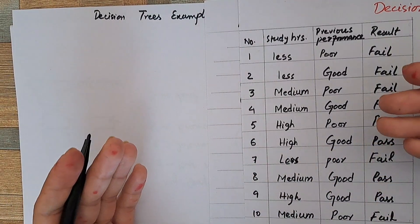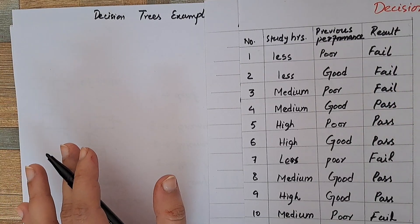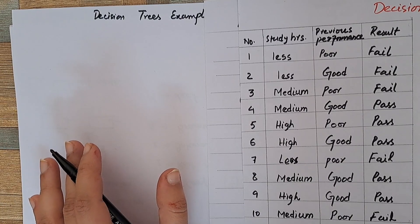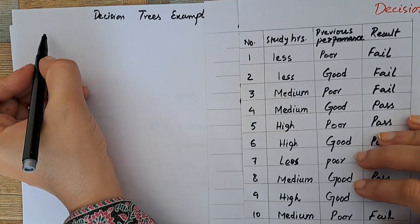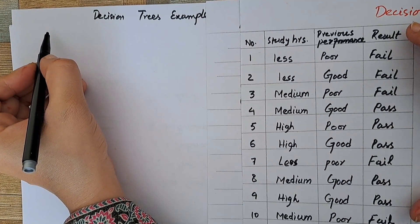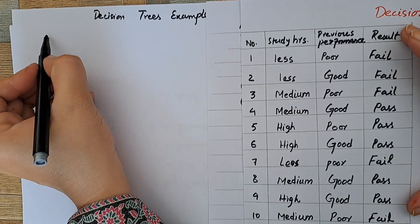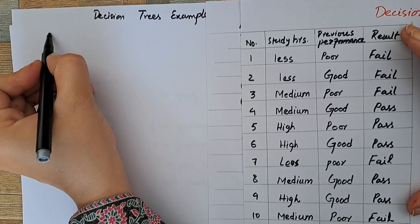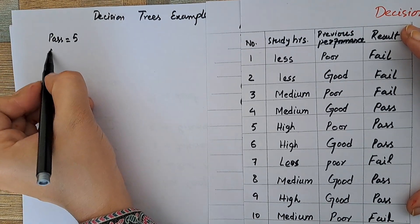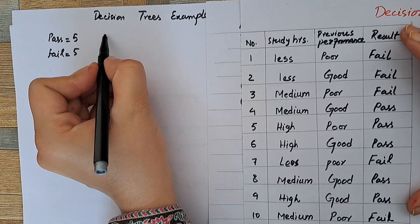Let's build a decision tree to determine how, for some unknown scenario, decision trees actually help us make a decision. The first step is to evaluate the entropy of the overall dataset — this is the resultant of our dataset. The number of samples of passed students is equal to 5 and the number of failed students is also equal to 5.